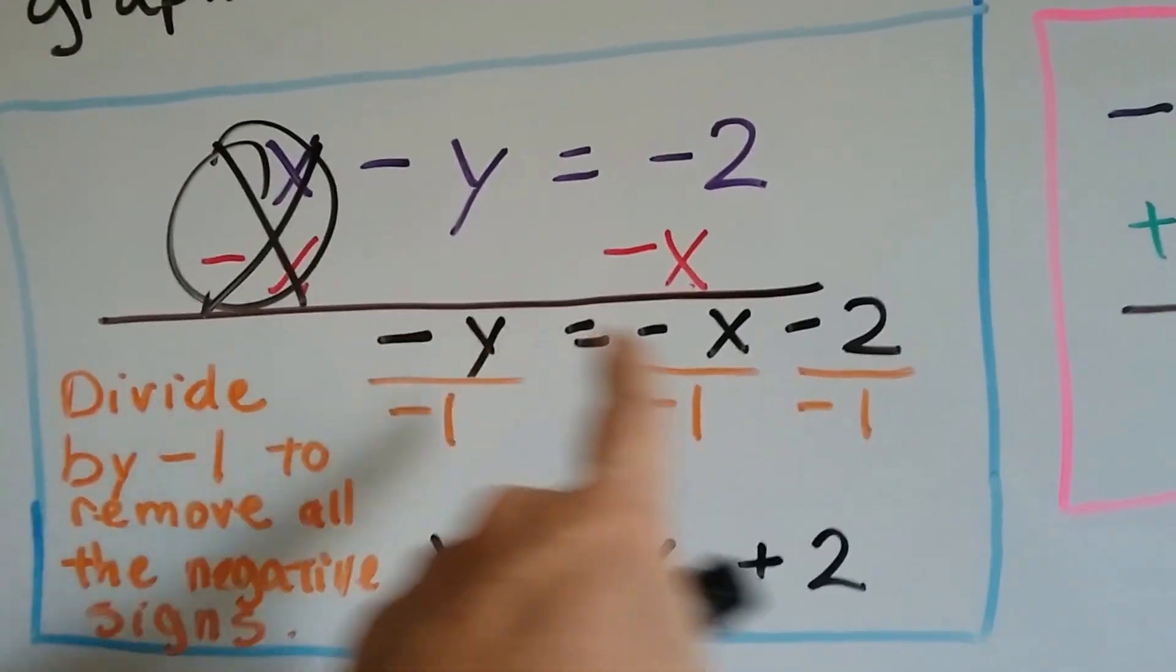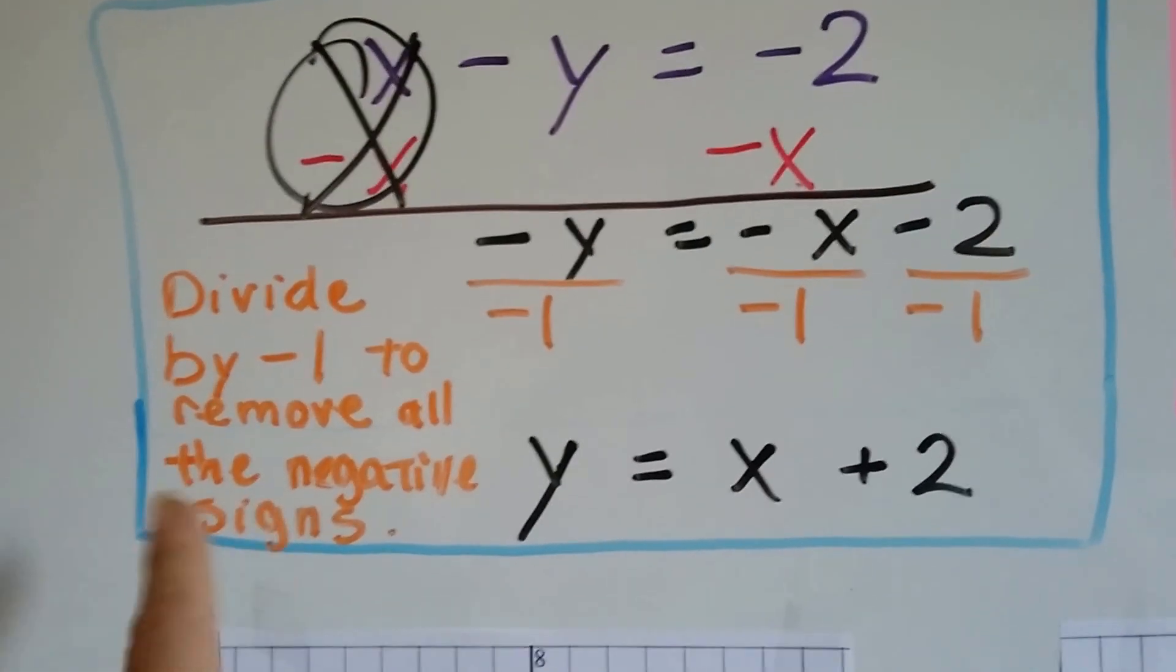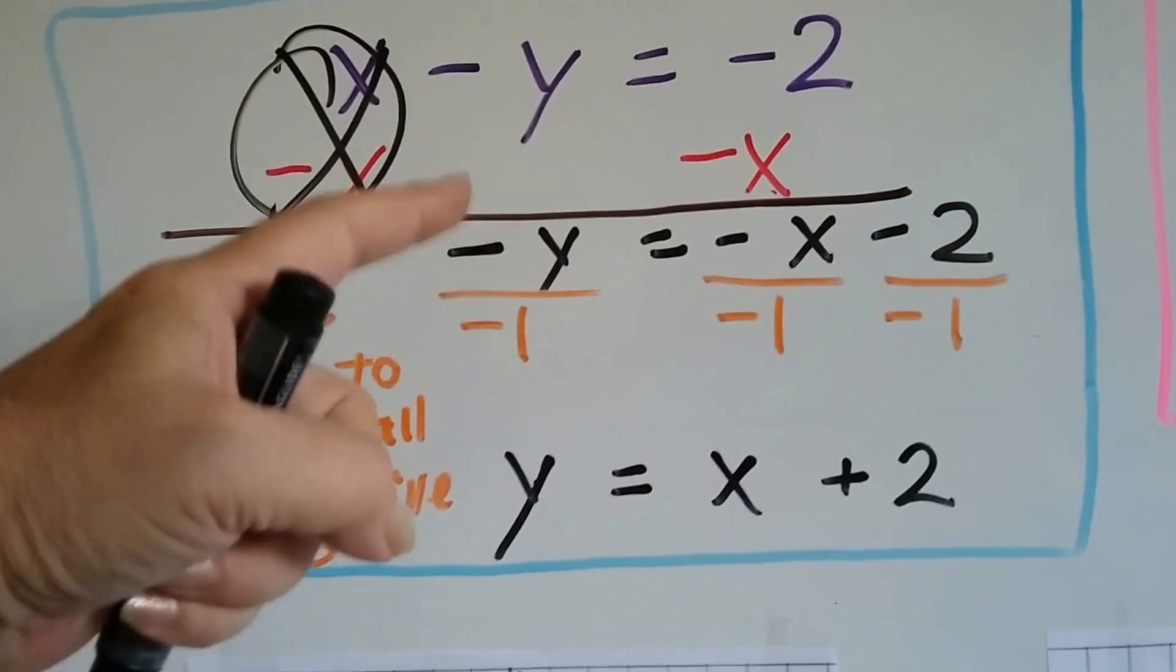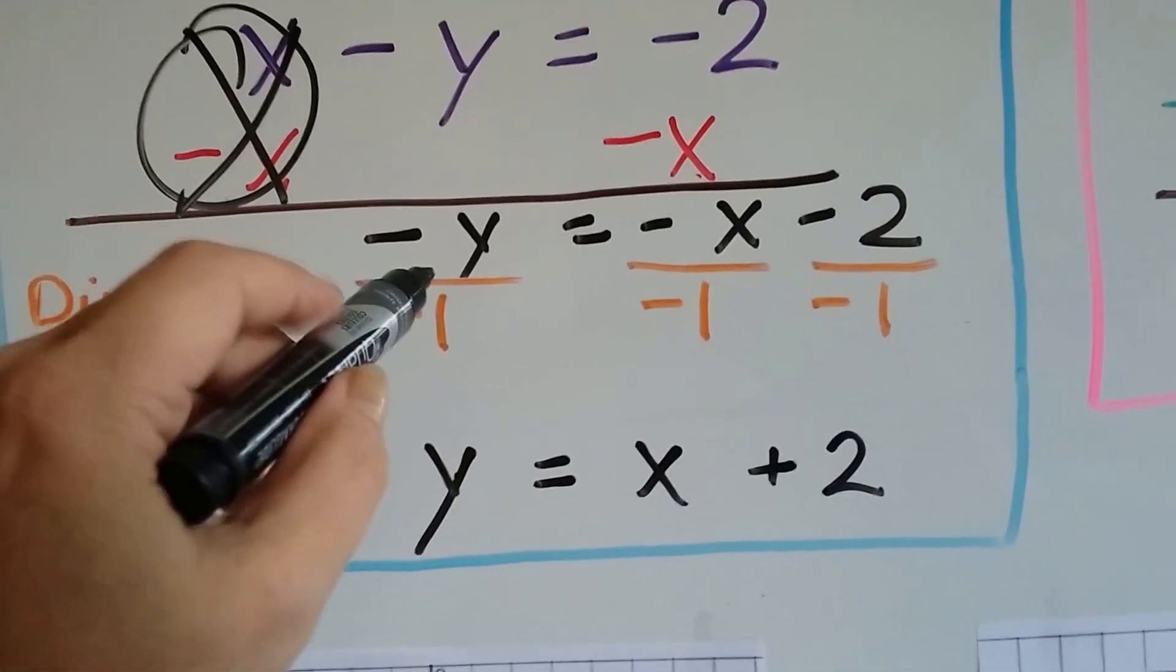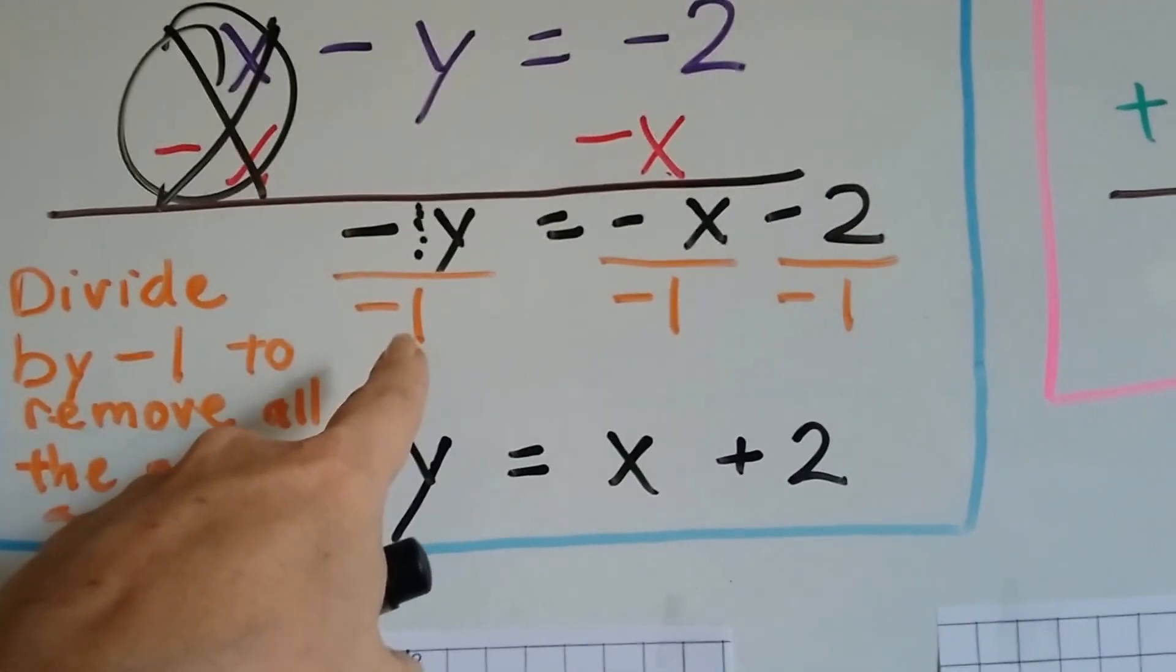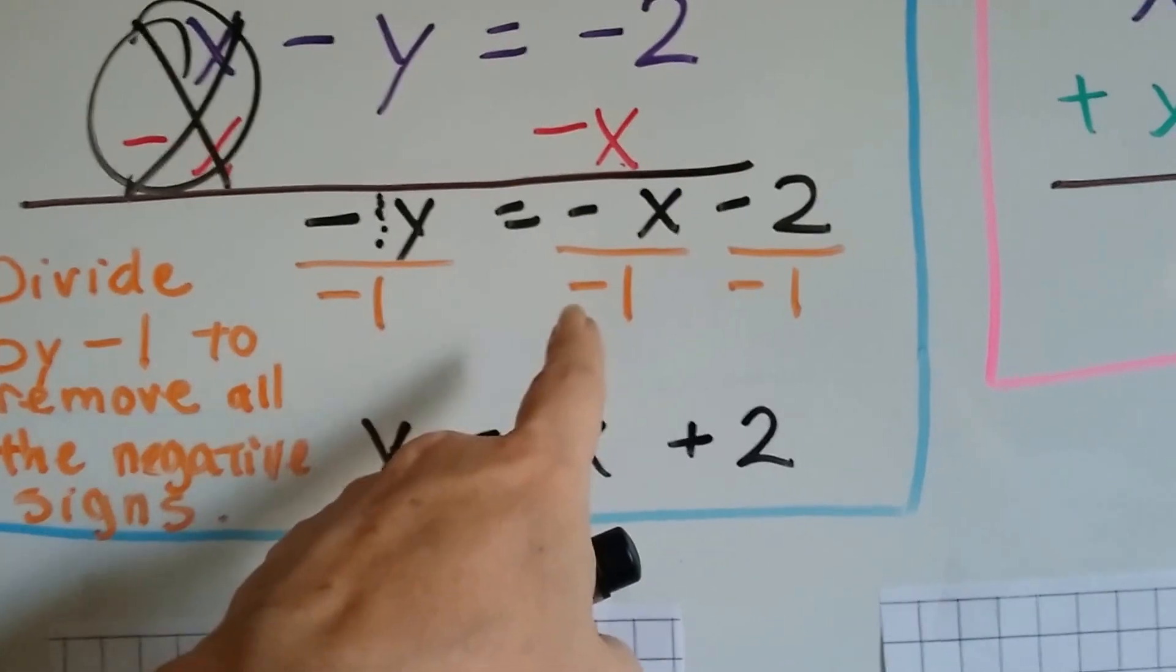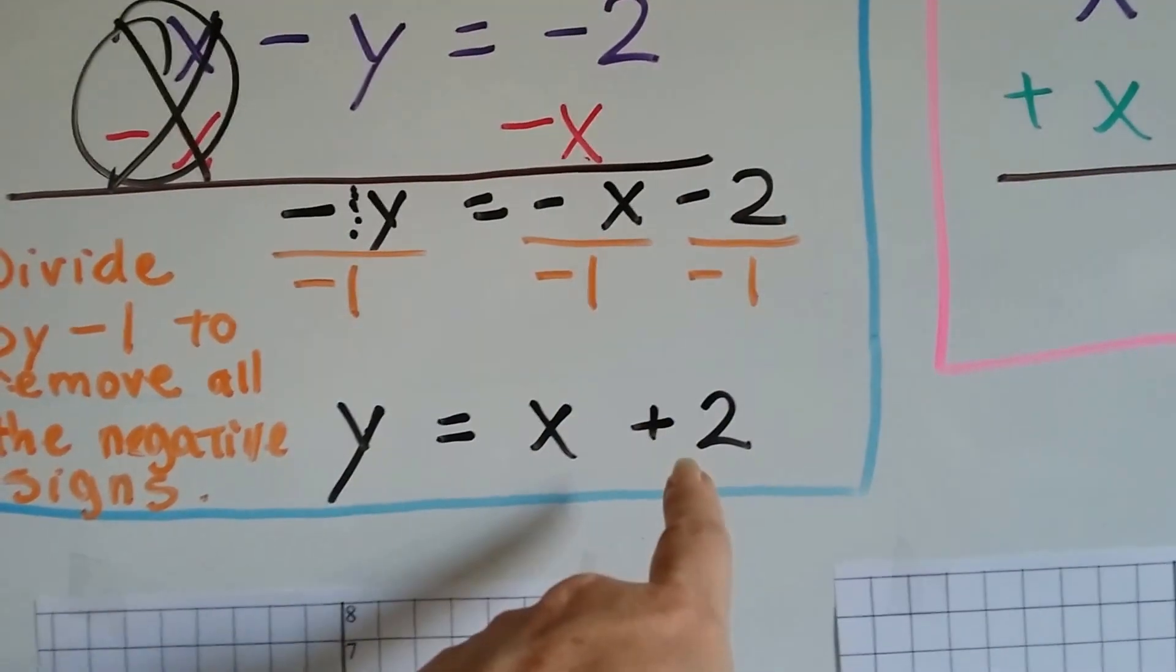We've got all these negatives. We've got three terms with negatives. Well, what we can do is divide by negative 1 and remove all the negative signs. Because remember when you divide a negative by a negative, it makes a positive? It's a lot easier to work with. So remember, there's our invisible 1 here. So we can divide by negative 1. Negative 1y divided by negative 1 is just a positive y. Negative x divided by negative 1 is a positive x. Negative 2 divided by negative 1 is a positive 2.